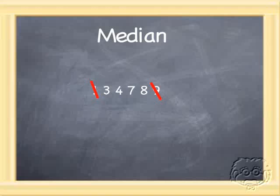We cross off the numbers just like last time. But uh-oh, now we're left with two numbers in the middle. So what do we do?